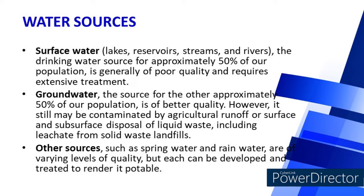We will now discuss different water sources: surface water, groundwater, and other sources. Surface waters such as lakes, reservoirs, streams, and rivers are the drinking water source for approximately 50% of our population, but are generally of poor quality and require extensive treatment. Groundwater is the source for the other approximately 50% and is of better quality, though it may still be contaminated by agricultural runoff or disposal of liquid waste. Other sources such as spring water and rainwater are of varying quality but can be treated to render them potable.